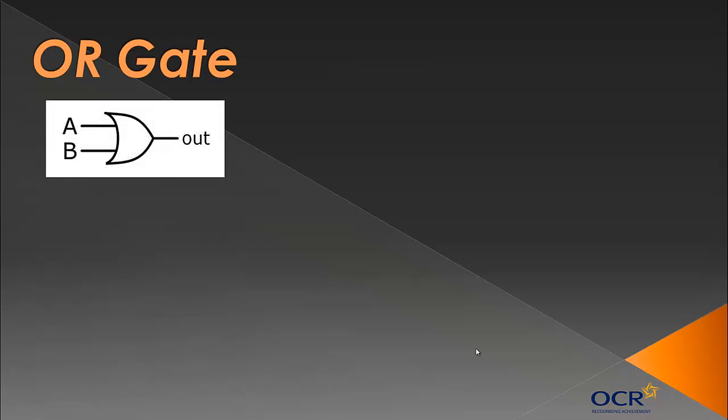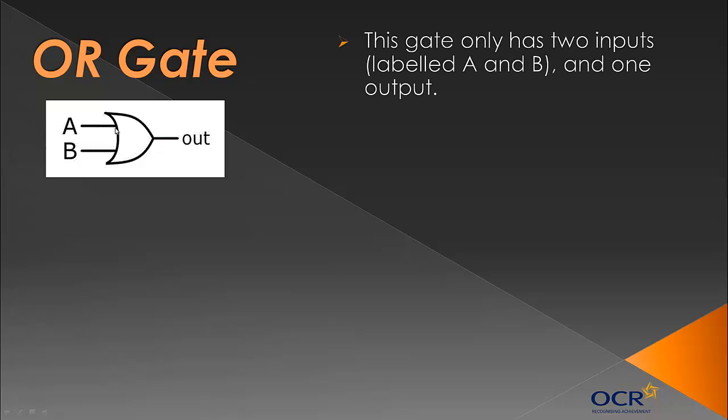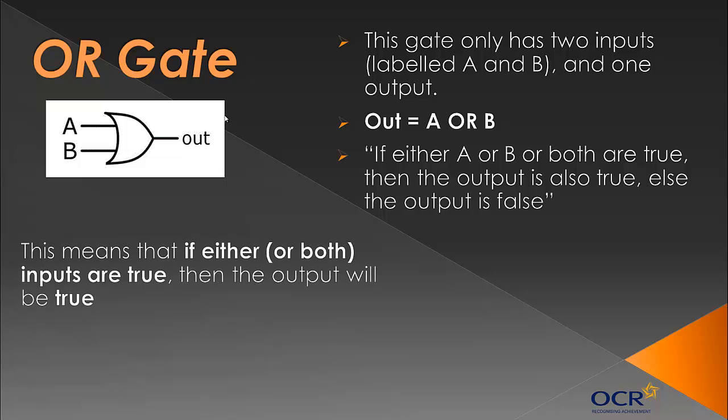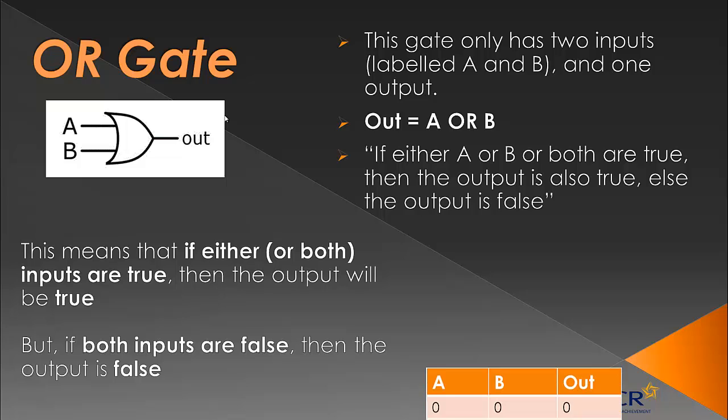So finally, we're going to look at the OR gate. Again, this is sort of like a crescent shape, like a crescent moon, I'm not sure. So again, remember this shape. So the gate has only two inputs, A and B, and one output. This is how you'd write it: output equals A or B. So the official rule is, if either A or B or both are true, then the output is also true, else the output is false. What it means if you interpret it is that if either or both inputs are true, then the output will be true. And if both inputs are false, then the output is false.